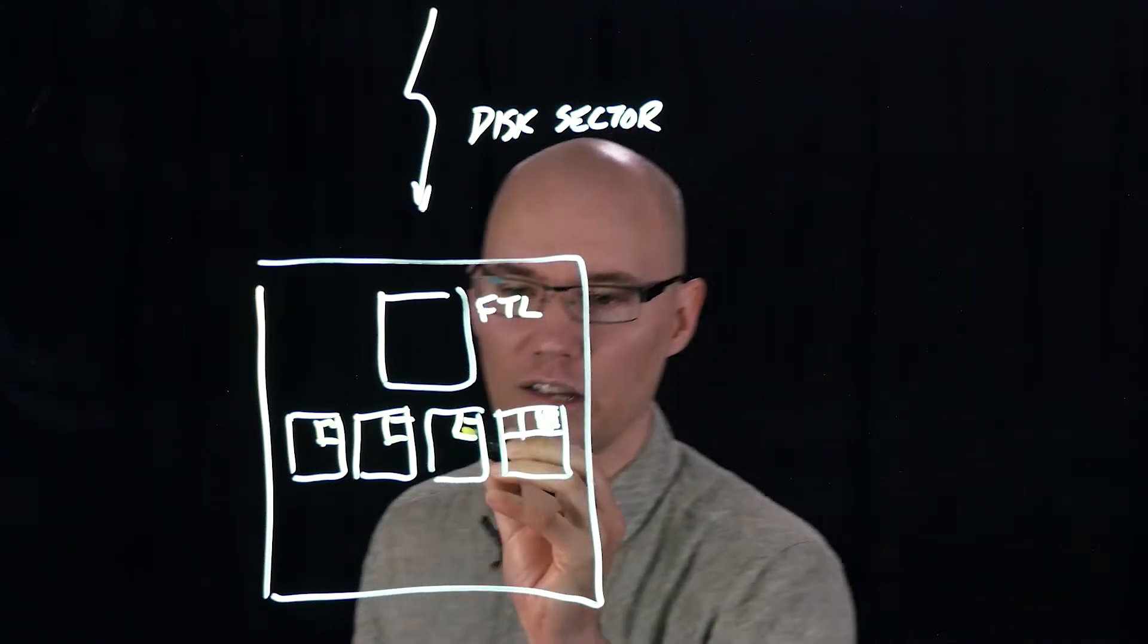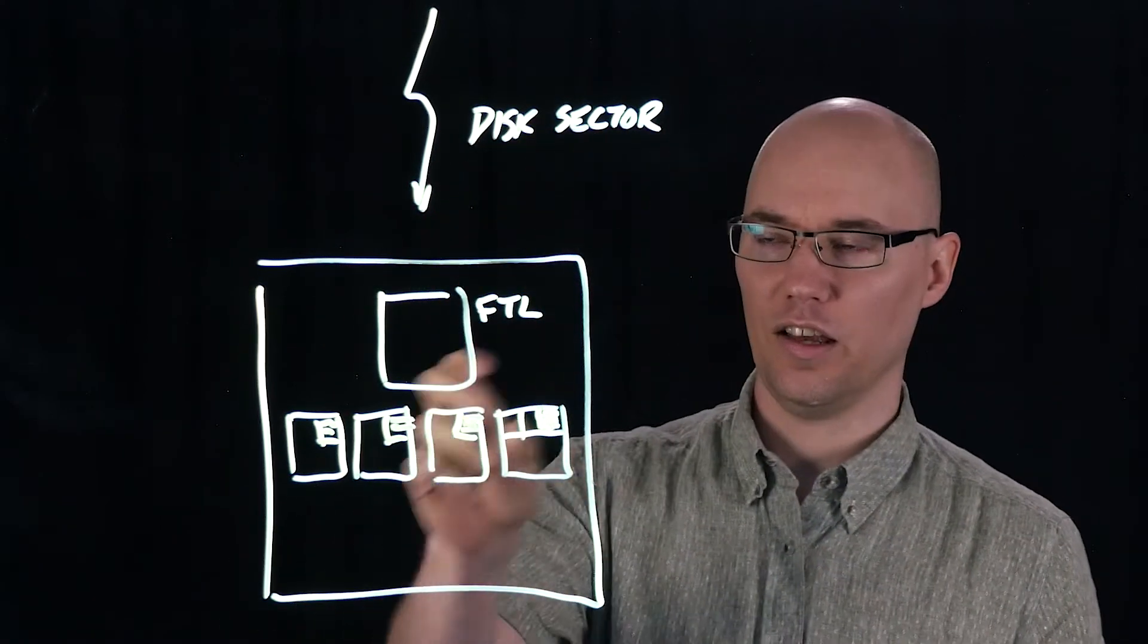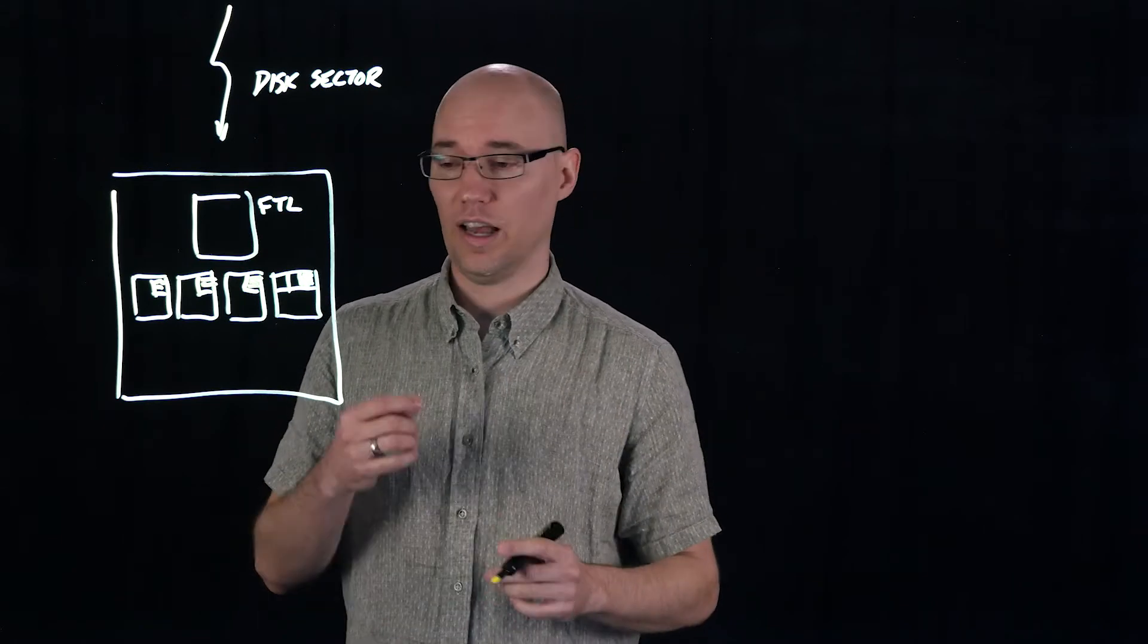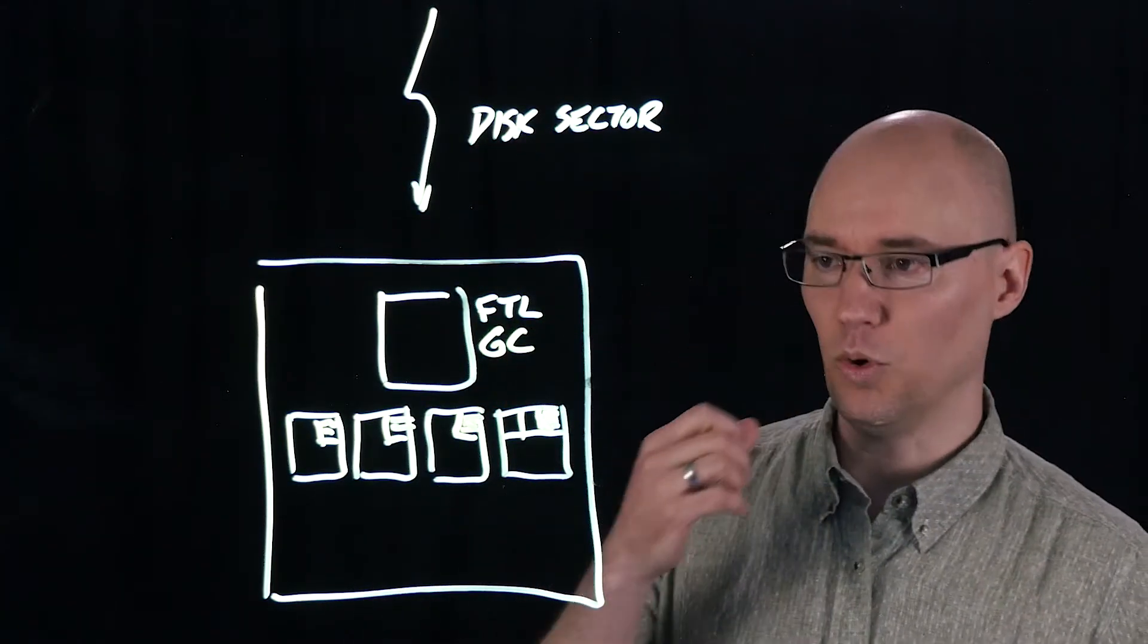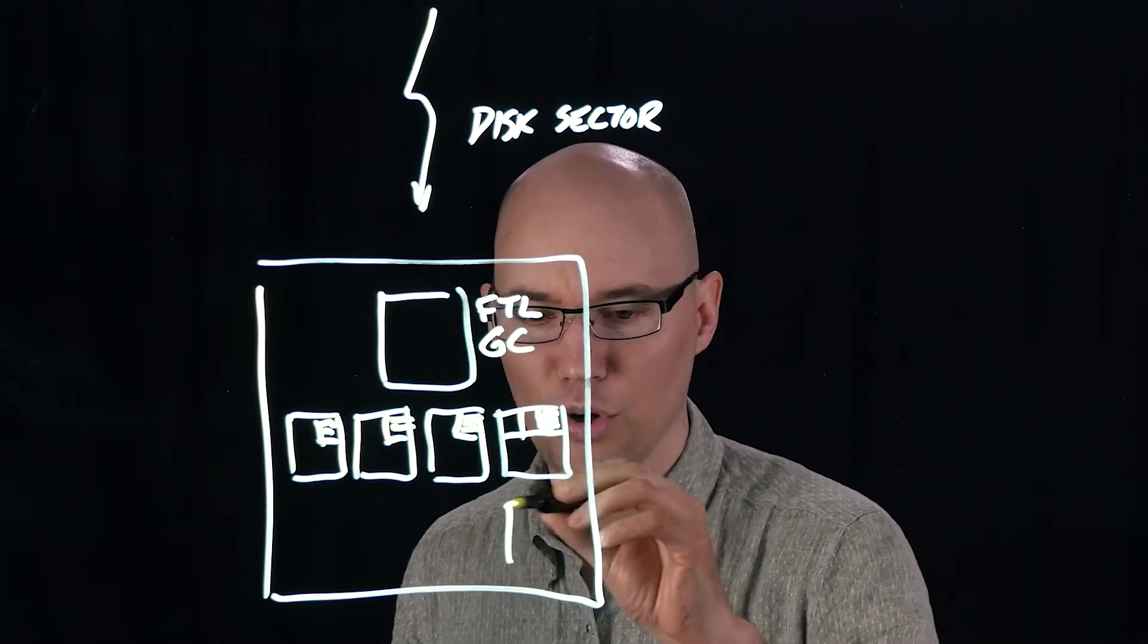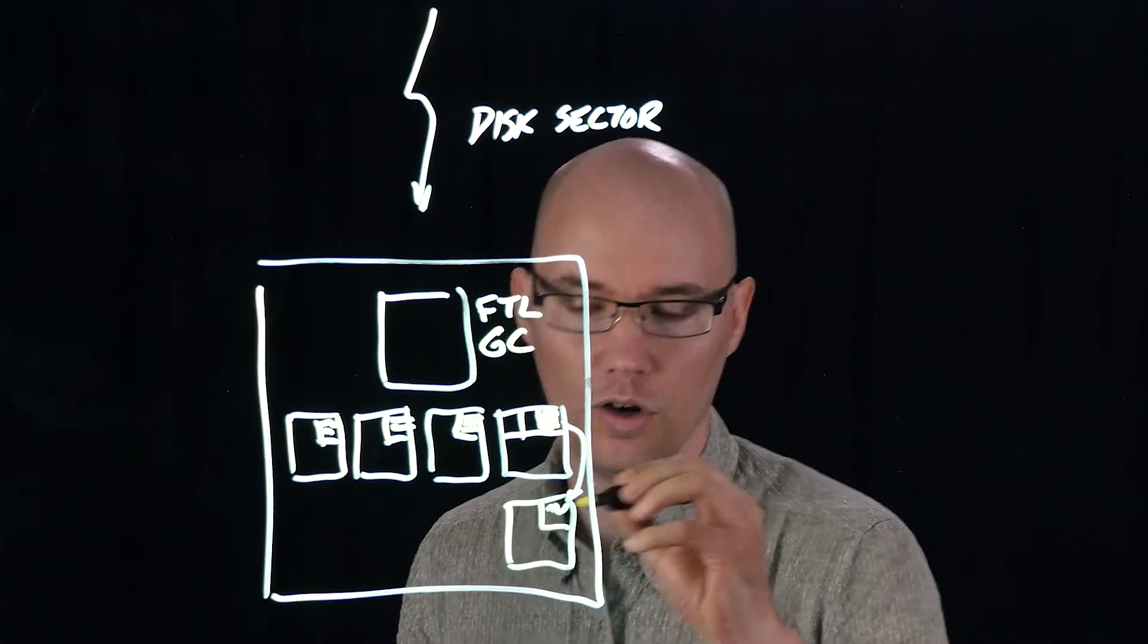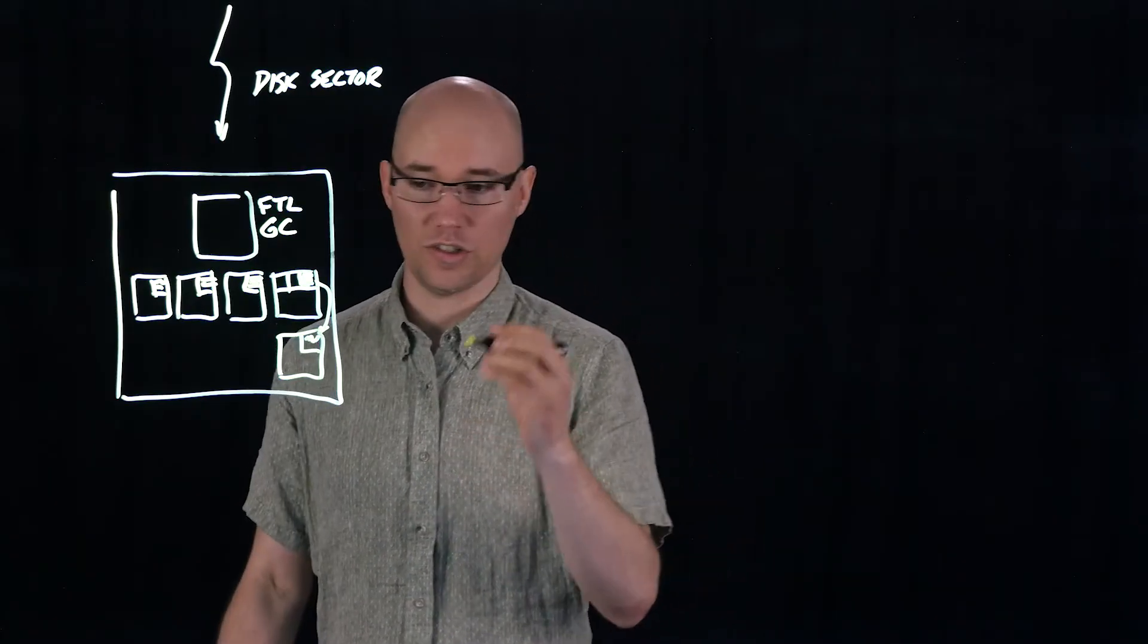Now because we're writing data into all these different flash blocks, eventually we accumulate data in those blocks which is garbage because the data has been overwritten or has been trimmed. And so we need a garbage collector in the firmware that takes that data and moves it to new locations. Read data from here, write data over to there. Now this starts to have a bunch of implications for how the SSD behaves.